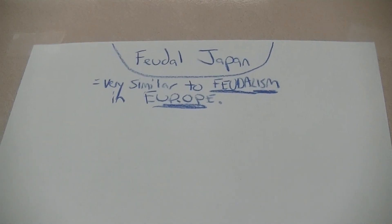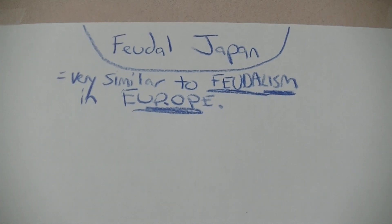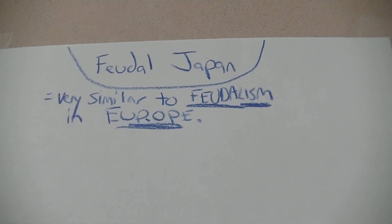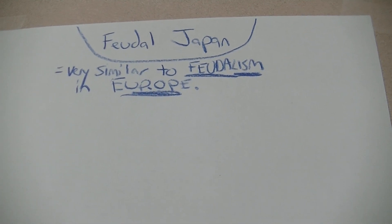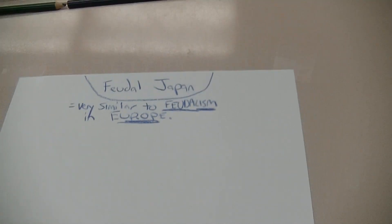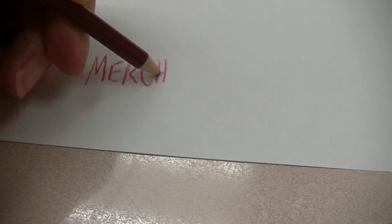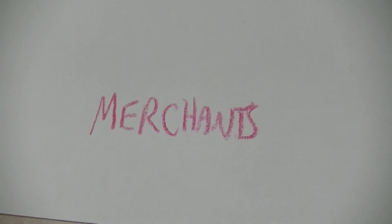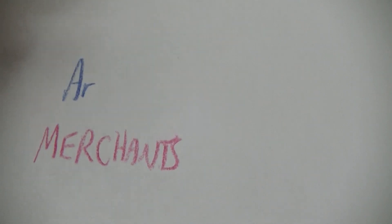We're going to be creating a hierarchy of people in feudal society — it's a social class system that makes Japanese society work for a while. It's going to be a pyramid. Starting at the bottom, the largest group: your merchants, those are people that sell things, your business owners, the lowest class. Above them you have your artisans, or sometimes pronounced artisans — these are your craft people.